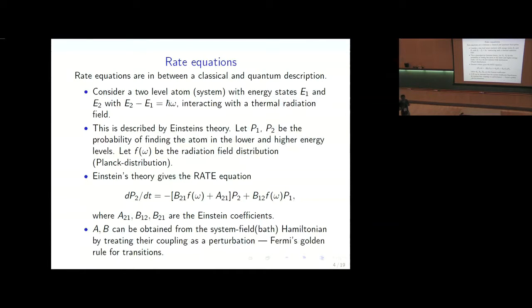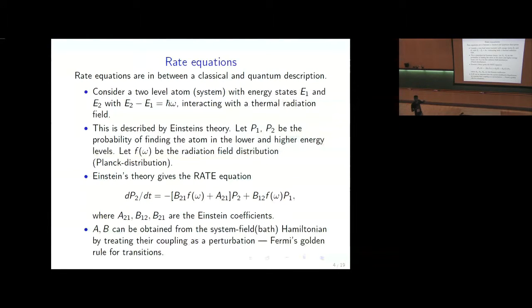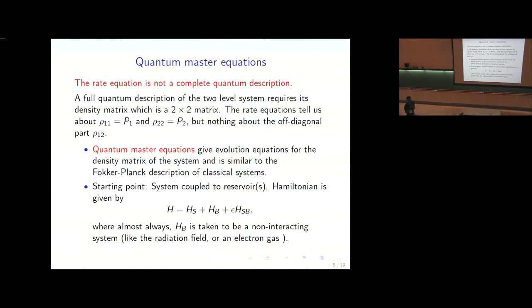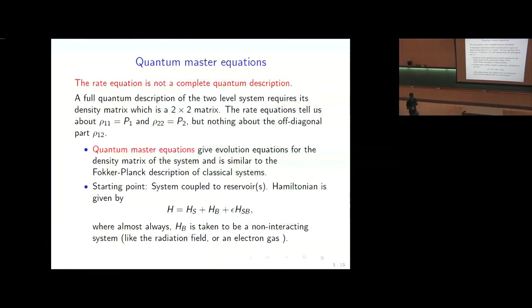The coefficients A and B — if you know the Hamiltonian of the system plus bath with a dipole coupling between the atom and the field — can be calculated using Fermi's Golden Rule, which is just perturbation theory. However, this is not a complete quantum description. A full quantum description of a two-level system requires you to write its density matrix, a 2×2 matrix with diagonal elements ρ₁ and ρ₂ (the probabilities) and an off-diagonal part ρ₁₂ containing quantum information. So the rate description is not fully quantum, though it has some quantum aspects.